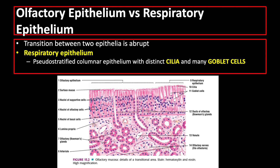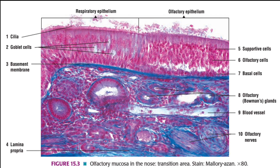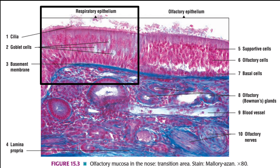In this slide, you can see the abrupt transition between the two epithelium types. The respiratory epithelium is lined by pseudostratified columnar epithelium with distinct cilia and many goblet cells, while the olfactory epithelium does not contain goblet cells and cilia, but you can find Bowman's glands at the lamina propria.